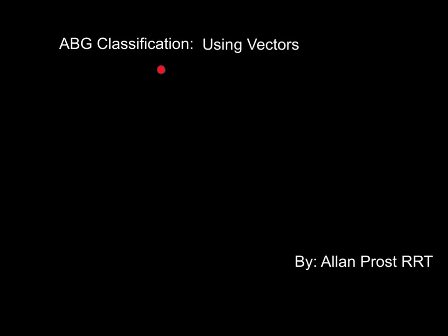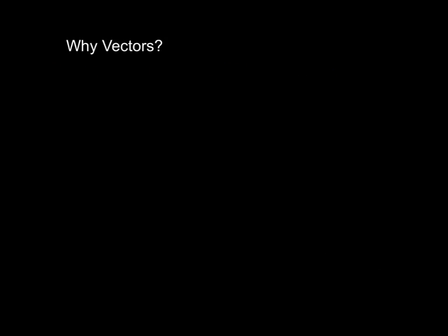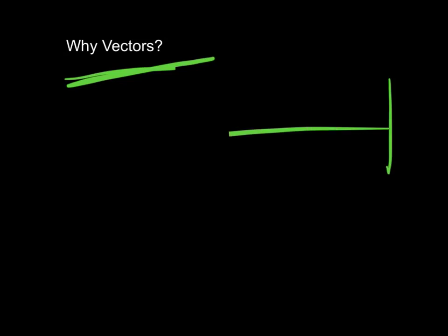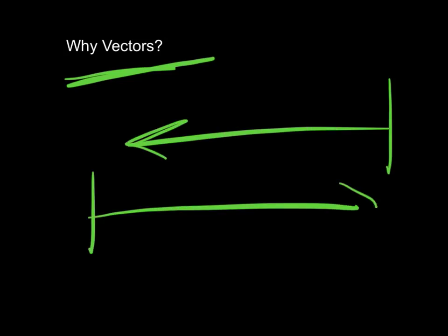Hello, my name is Alan Prost, and I'm going to teach you how to do arterial blood gas classification using vector analysis. You might be wondering why somebody would use vector analysis to analyze arterial blood gases. If you're like me, you probably learn better by seeing things visually, and that's one of the things that vectors do for us — they give us a visual representation of the relationship between pH, CO2, bicarbonate, and base excess. We're not going to talk about oxygenation in this particular video; we'll talk about that at another time.